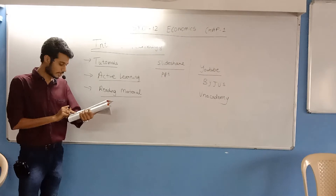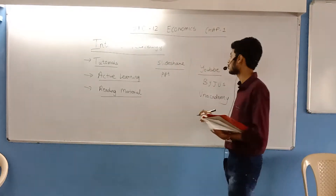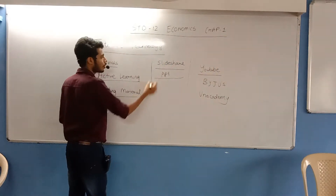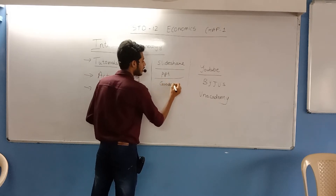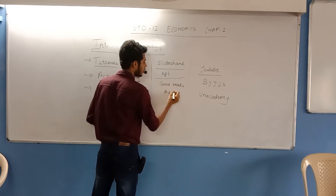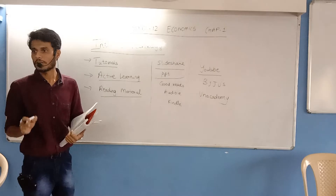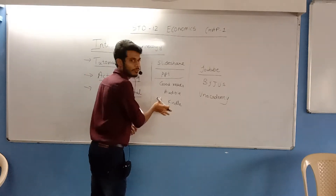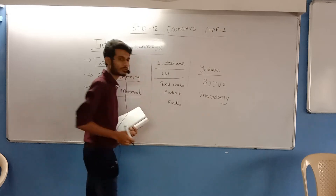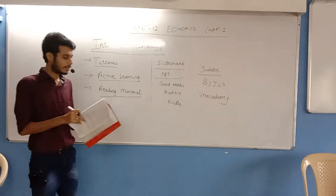Numerous books are available online for reading, free of cost, and there are certain websites which provide e-books. Some names include Goodreads, Audible, and Amazon Kindle. Some of these websites or applications are free of cost but some contain paid information — you have to pay in order to download an e-book. These are websites or applications you can use for getting your reading material online.